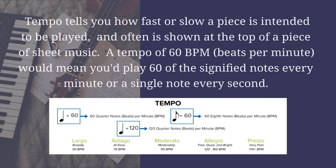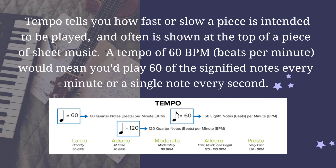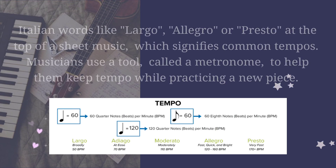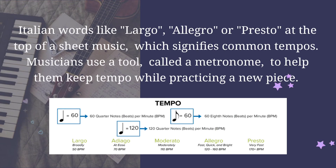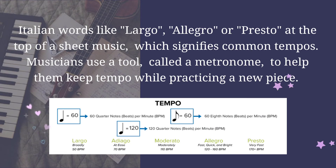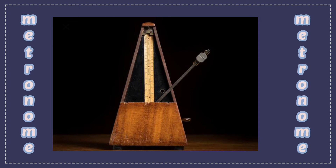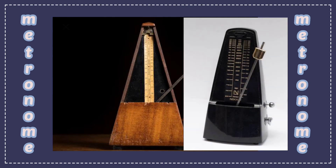Tempo tells you how fast or slow a piece is intended to be played, and often is shown at the top of a piece of sheet music. A tempo of 60 beats per minute would mean you play 60 of the signified notes every minute, or a single note every second. Italian words like largo, allegro, or presto at the top of sheet music signify common tempos. Musicians use a tool called a metronome to help them keep tempo while practicing a new piece.